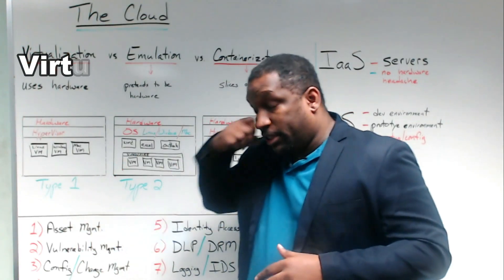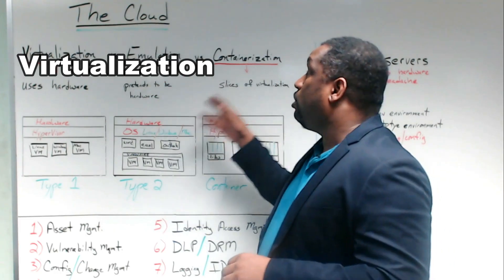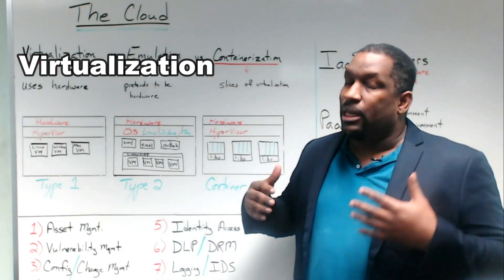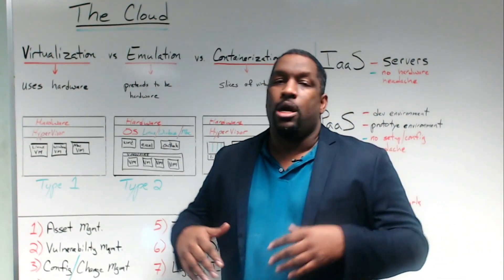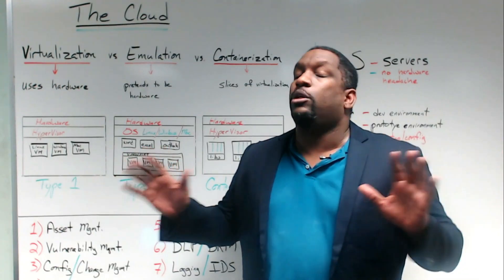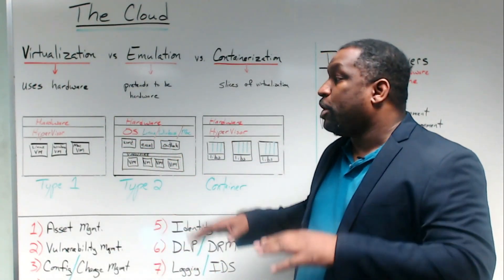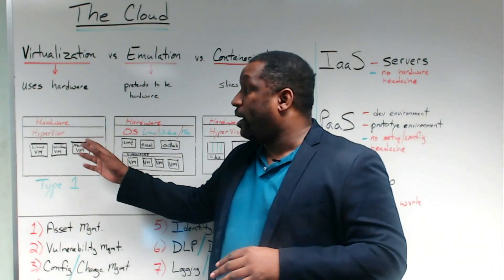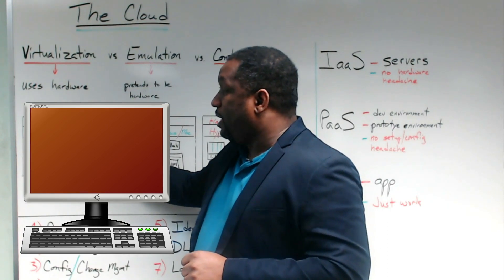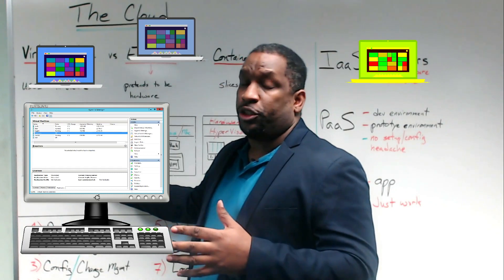We'll start with virtualization — you'll hear people talk about virtualization versus emulation versus containerization. You're going to hear a lot of buzzwords in our industry about Docker, Vagrant, Kubernetes, and all these really cool things. But let's bring it down and start with some basics. First, you've got your hardware — your computer, basic hardware — and then you've got your hypervisor, and then you've got each individual virtual machine.